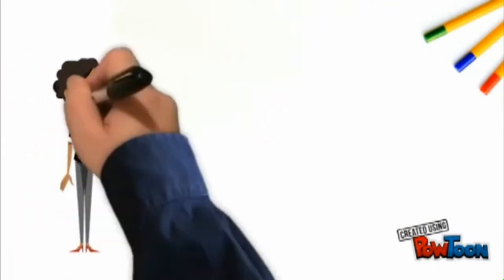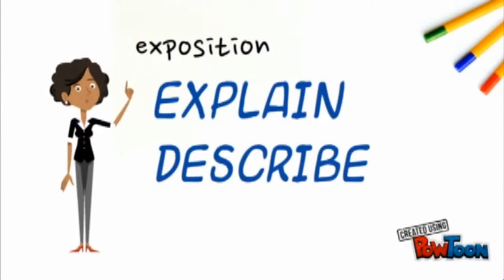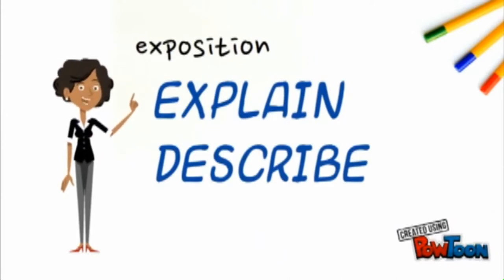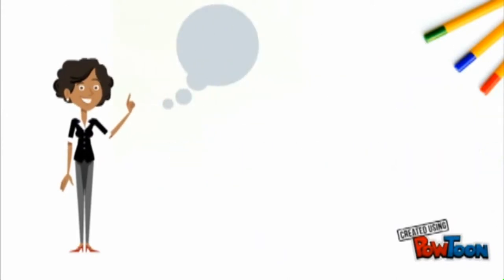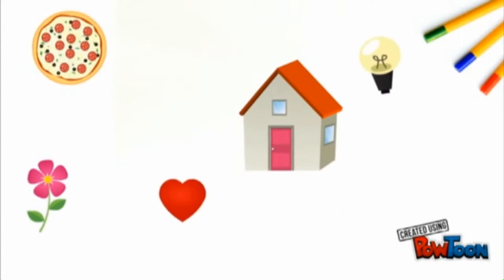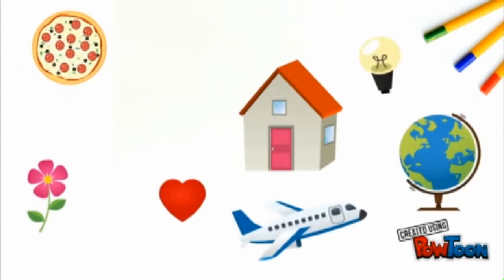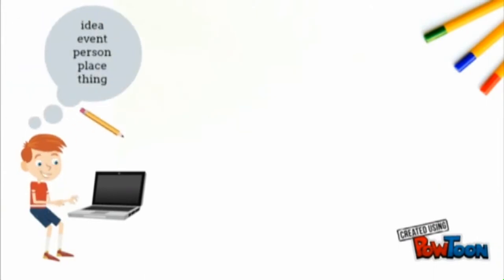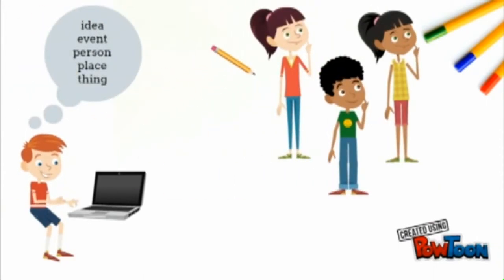When we talk about exposition in writing, we are referring to the idea of explaining or describing something. The topic can be an idea, an event, a person, or a thing. You can describe or explain just about anything you want. The basic idea that makes a piece expository is that the author's focus is clearly transmitted to the reader.